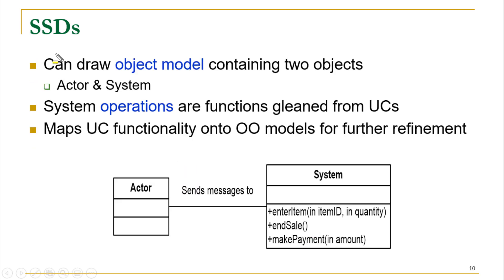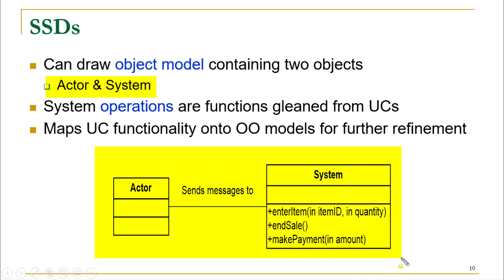The system sequence diagram is the interaction between actor and the system. That is why we are only considering the actor and the system here, and there is no explicit description or representation of the internal details of the system — no internal classes of the system are shown here.